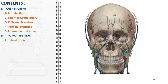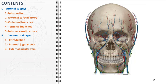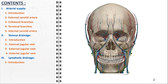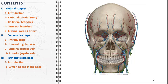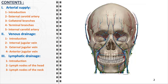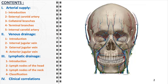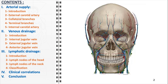Our focus will then shift to the venous drainage system, where we will examine the internal, external, and anterior jugular veins in depth. We will also delve into the lymphatic drainage, particularly highlighting the lymph nodes of the head and neck and the various levels of the cervical lymph nodes. We will conclude by exploring vital clinical correlations, providing insights into how an understanding of facial vasculature can inform medical diagnostics and treatments.